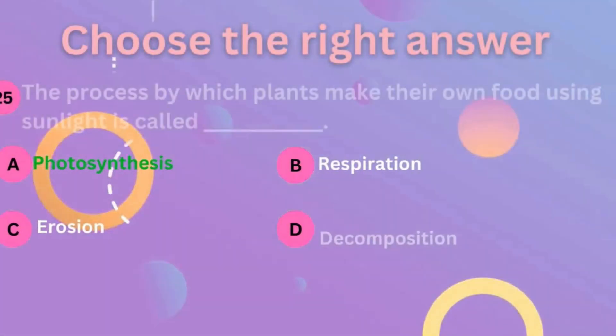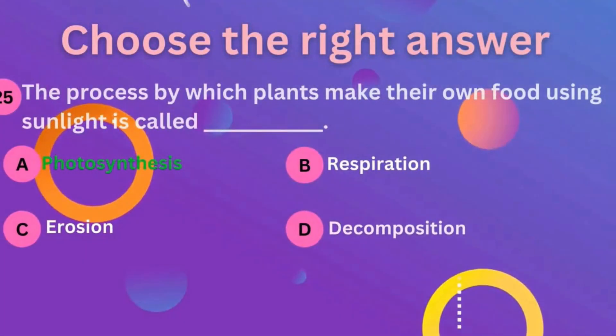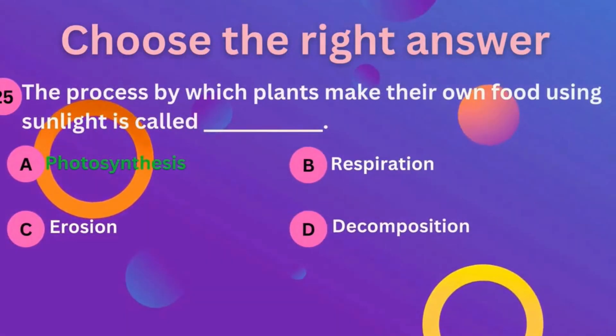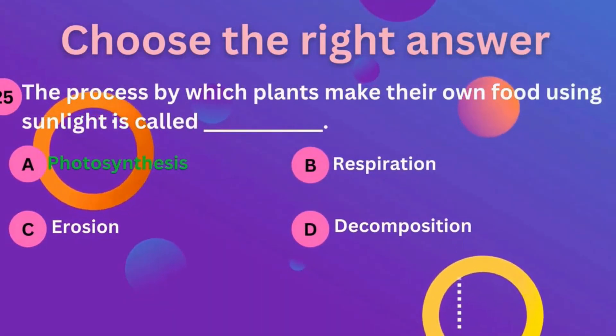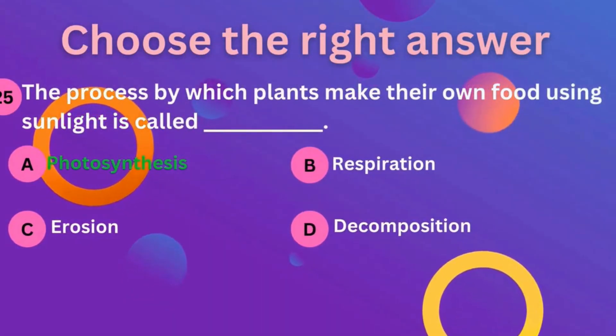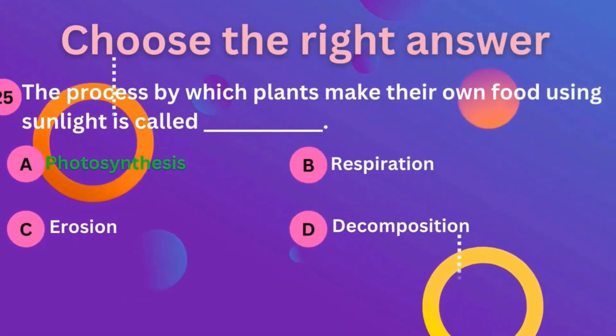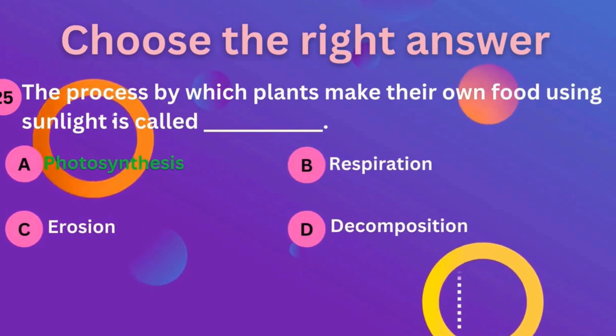Question 25: the process by which plants make their own food using sunlight is called photosynthesis.